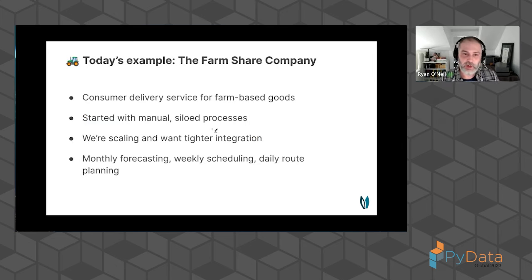For the example today, we're going to pretend that we are part of a farm share company. We deliver carrots and beets and lettuces to vegetable-oriented people. We're moving from manual siloed processes using spreadsheets to a technology platform with tighter integration. The three primary things we need to do are forecast demand for carrots, schedule our carrot delivery vehicles, and do route planning to get them to the actual end consumers. We might forecast once a month or week, schedule in tandem with the forecast, and route plan daily.